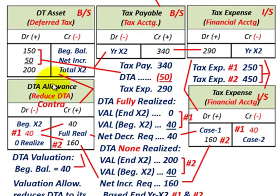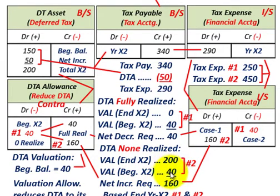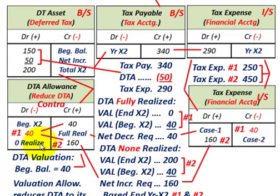Go down to your comparison: you take your valuation at the end of year X2 — it needs to be $200,000 because we want to eliminate all of this deferred tax asset from our asset account. You're already at a beginning amount of $40,000, so you need a net increase of $160,000 — from $40,000 up to $200,000.